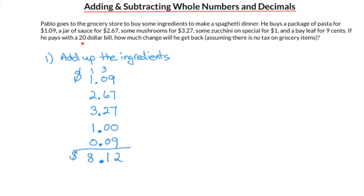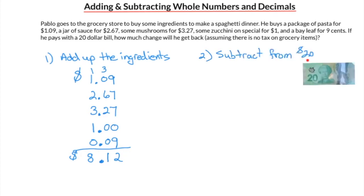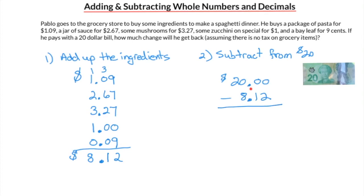Now we're paying with a $20 bill, so to find out how much change we're going to get back, the next step is to subtract the total cost of the ingredients from 20. The 20 is a whole amount, so the decimal is right after the zero. We can turn it into a dollar and cents amount by simply adding two zeros after the decimal. Let's bring over the $8.12 and subtract it from $20.00, making sure that the decimals are aligned in the same column.